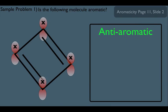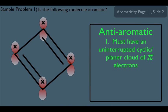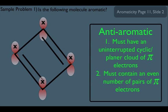Well, number one, just like in aromaticity, you have to have the uninterrupted cyclic planar cloud of pi electrons. And two, you must contain an even number of pair of pi electrons.